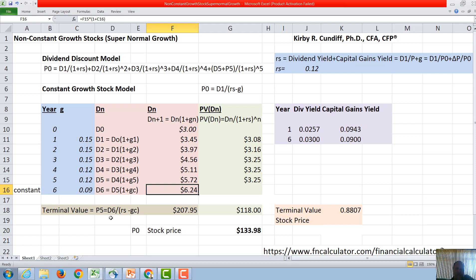During the terminal year this becomes a constant growth stock. For a constant growth stock the price of the stock is next year's dividend over rs minus g. In this case P5 is D6 over rs minus g constant. F16, which is 6.24, divided by rs or required rate of return which is 0.12 minus the constant growth rate of 0.09, so that's 12 minus 9 or 3, 6.24 divided by 0.03 which gives us $207.95.